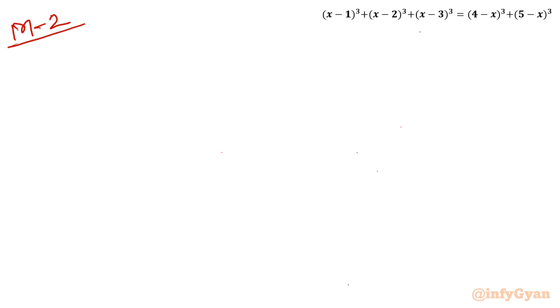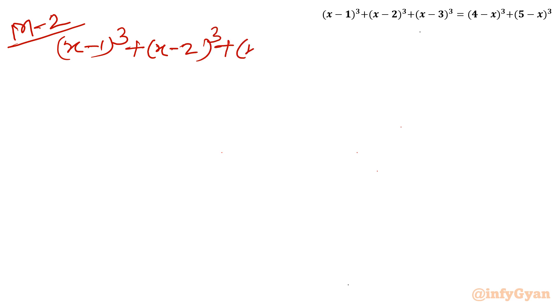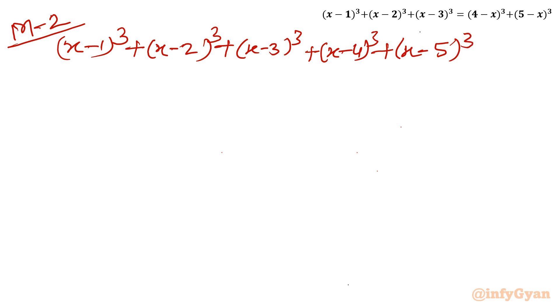Now for Method 2, which is comparatively easier because it uses substitution. Let me write our equation with all terms on one side: (x−1)³ + (x−2)³ + (x−3)³ + (x−4)³ + (x−5)³ = 0. You can see that 3 is the central point of the constants 1 through 5.